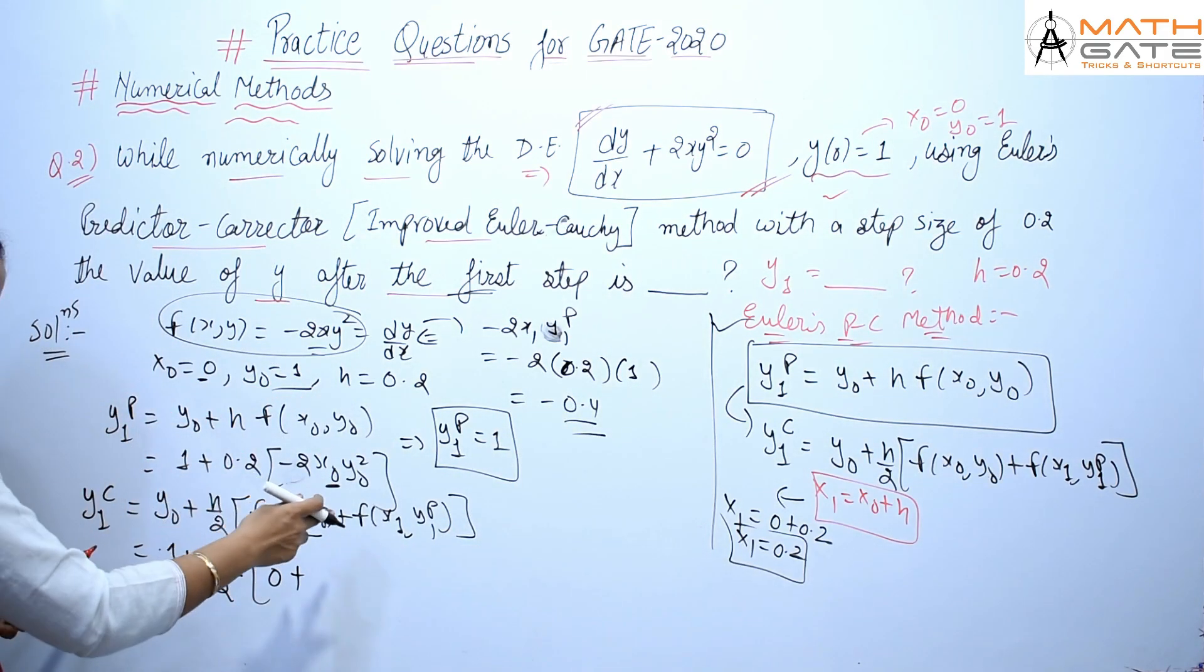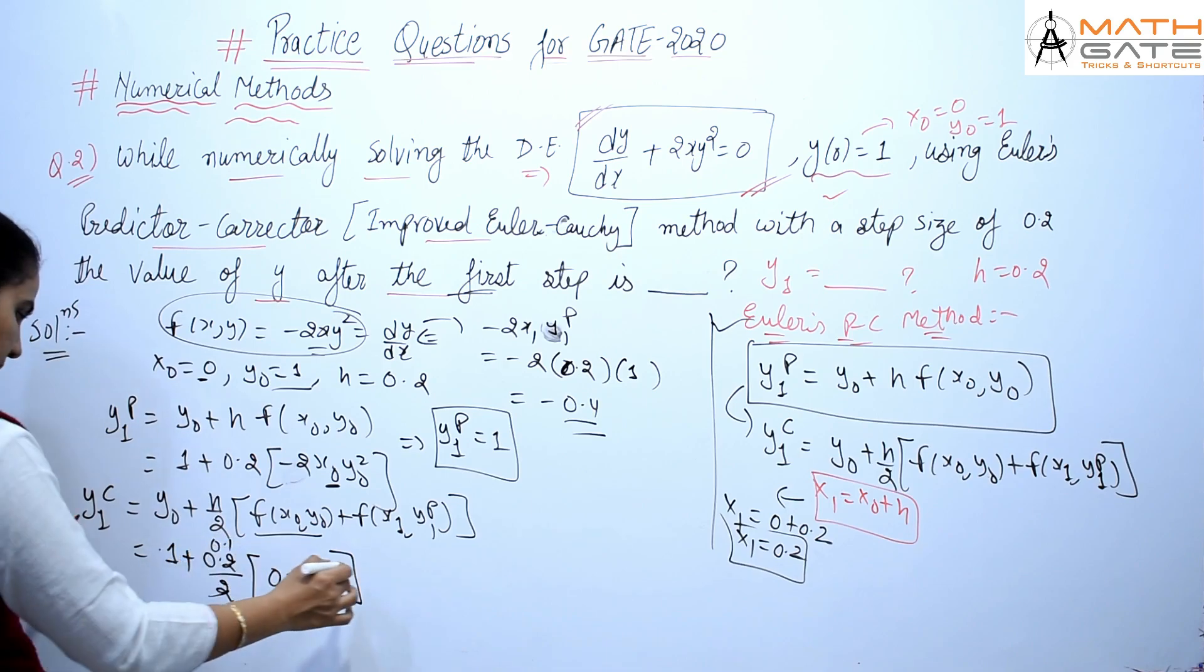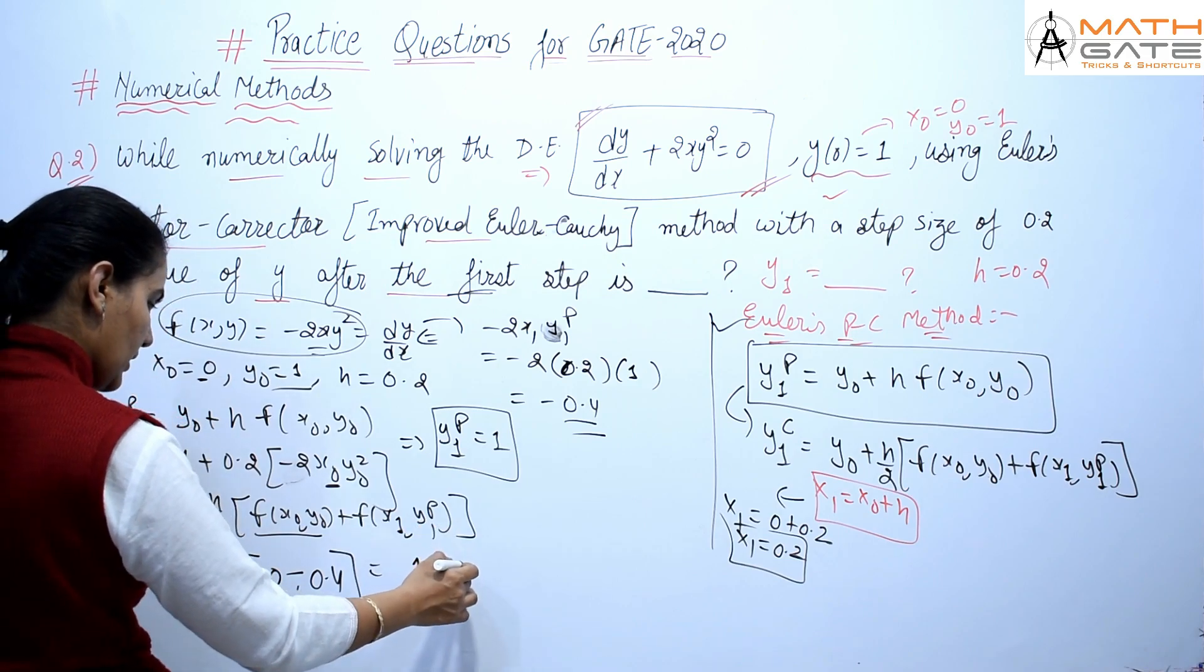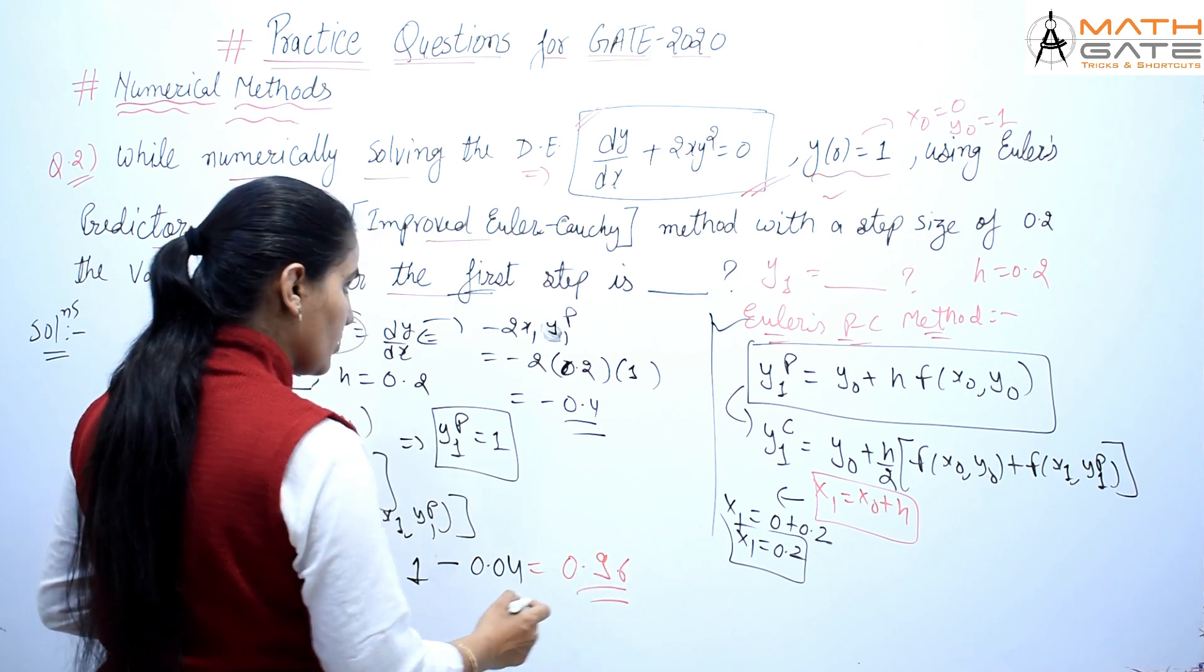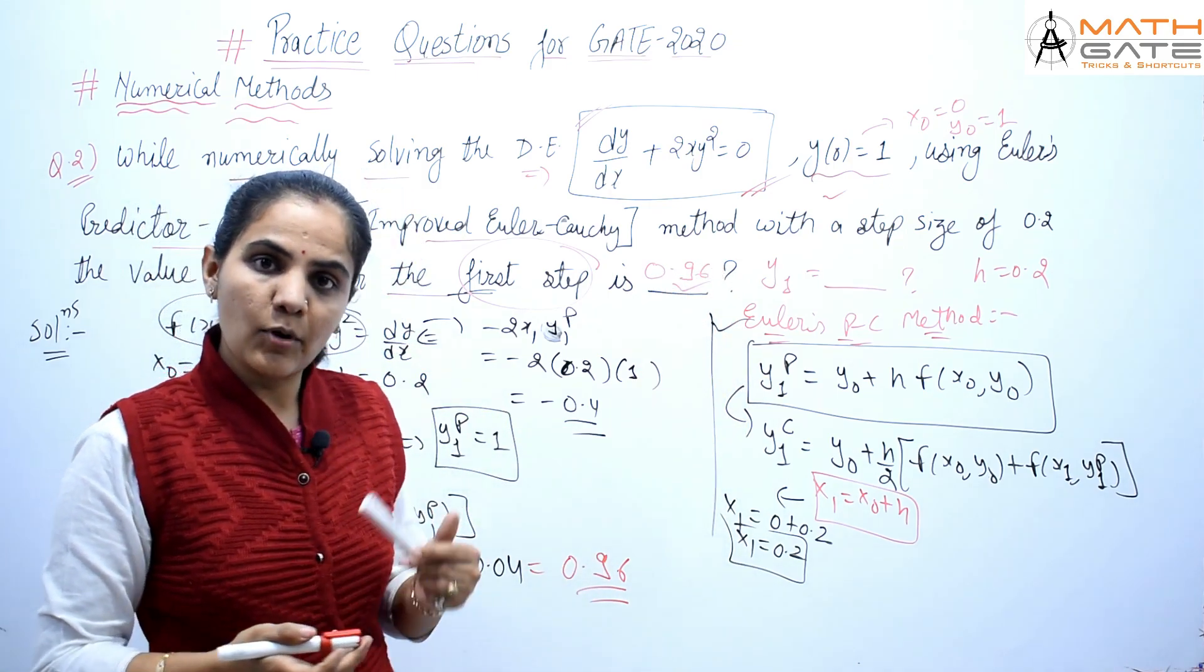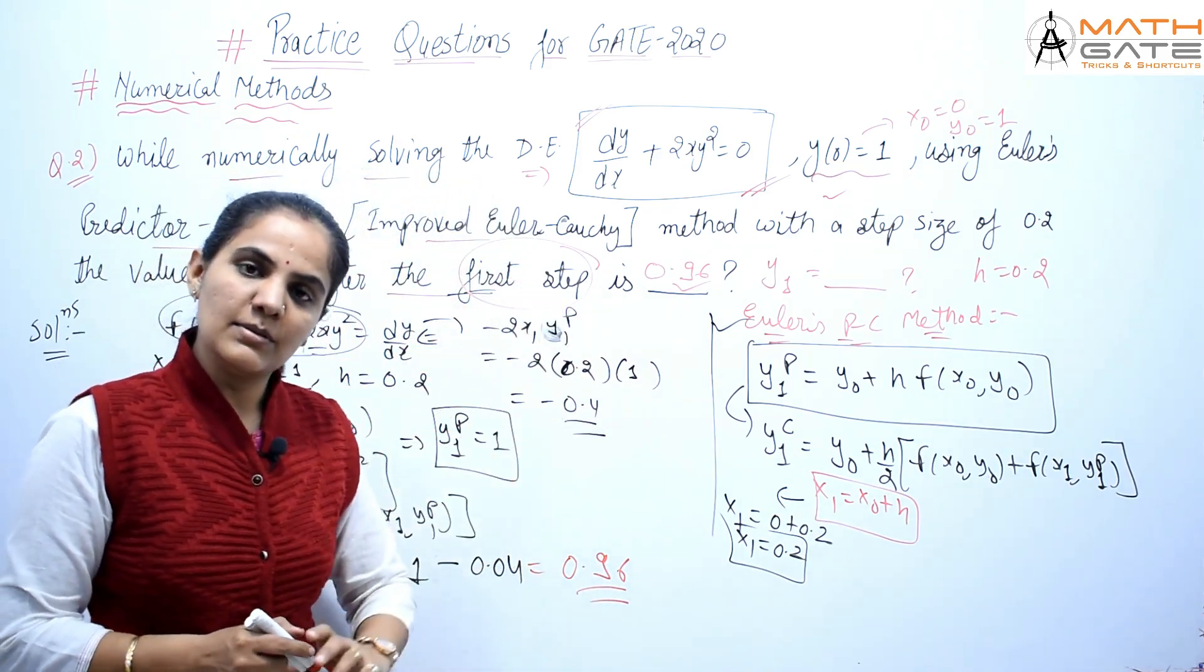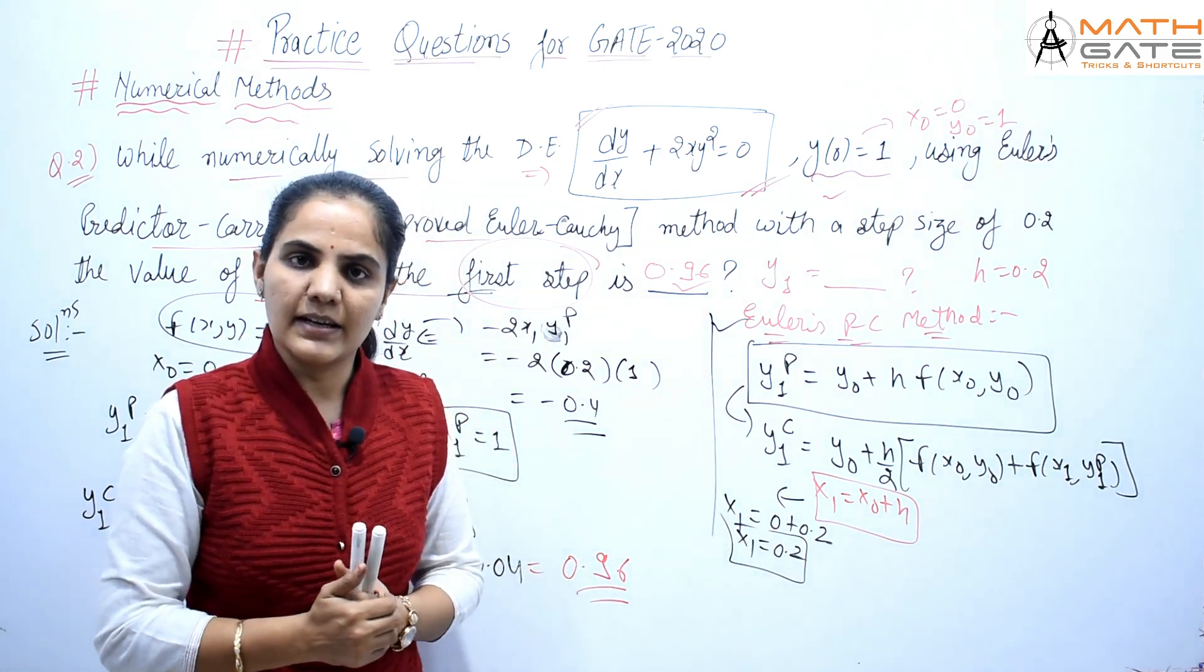So f(x₁, y₁ᵖ) = -0.4. This becomes 1 + 0.1 × (-0.4) = 1 - 0.04 = 0.96. So y₁ = 0.96.